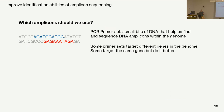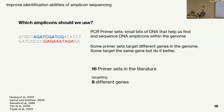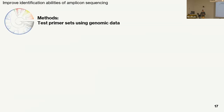16S does not work for Pseudomonas syringae because it doesn't have enough resolution. Over the years, plant pathologists have looked at many different housekeeping genes and developed primer sets to identify strains. Going through the literature I found 16 different primer sets targeting 8 different genes. The first part of this project looks at those primer sets to see which might be the best candidate for building classifiers — all done in silico.